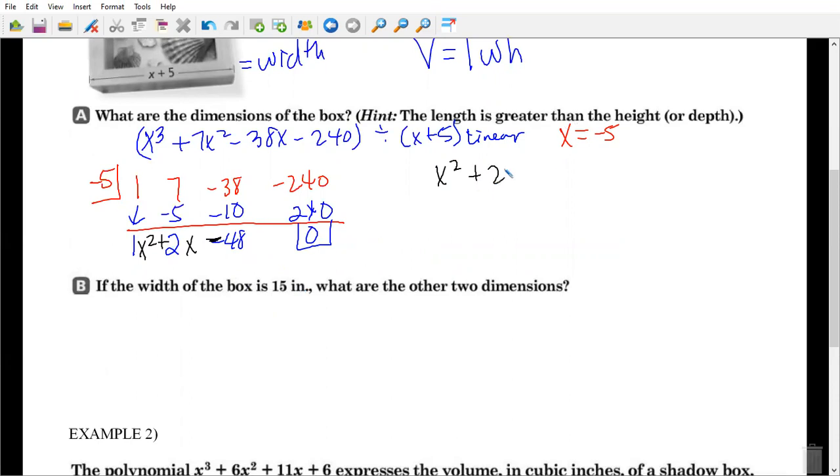So we have x squared plus 2x minus 48. So I'm asking myself, what multiplies to give me negative 48 but adds to give me 2? What multiplies to give me 48 but adds to give me 2? A positive 8 and a negative 6. Agreed?